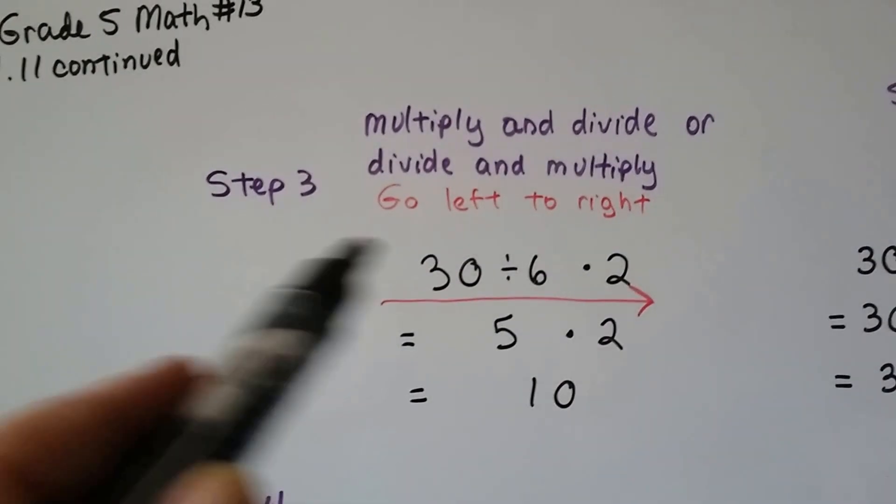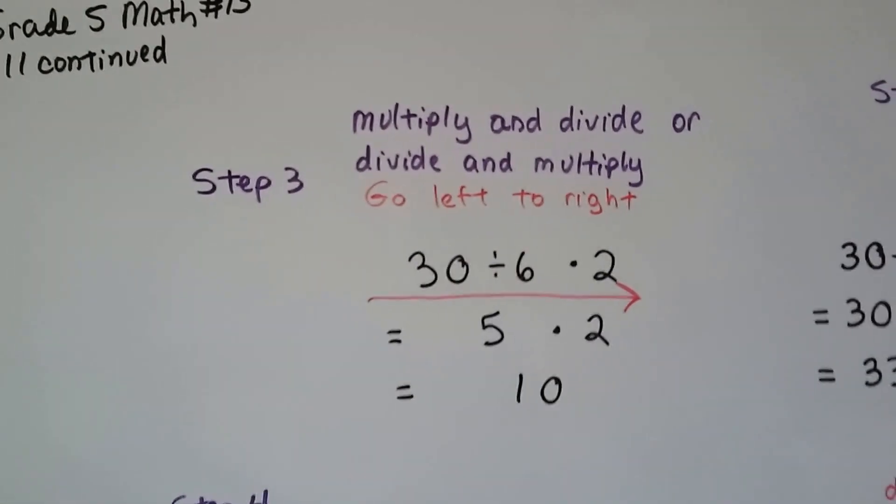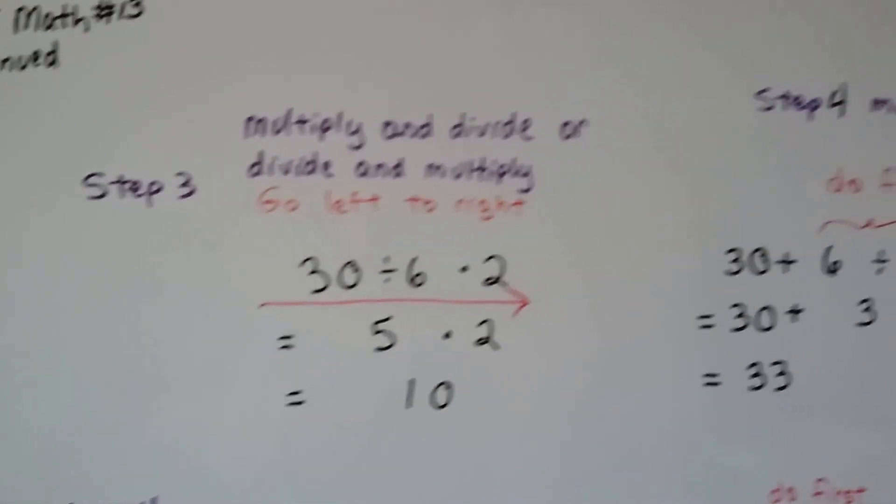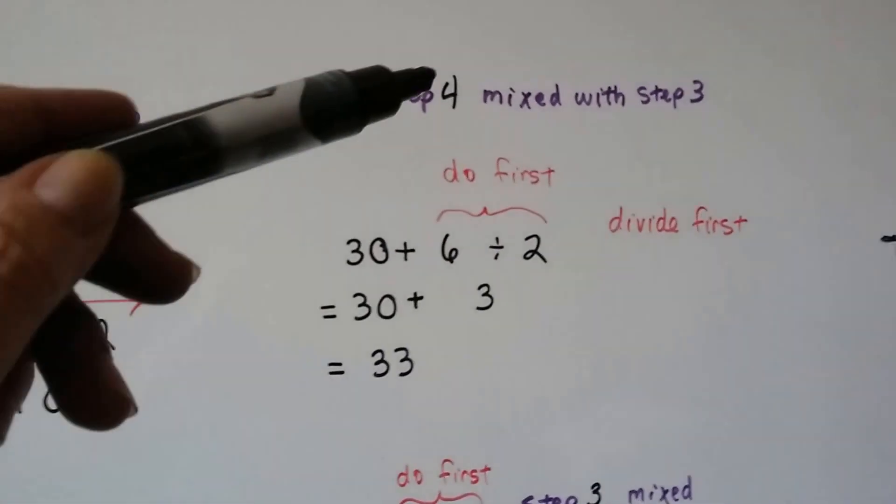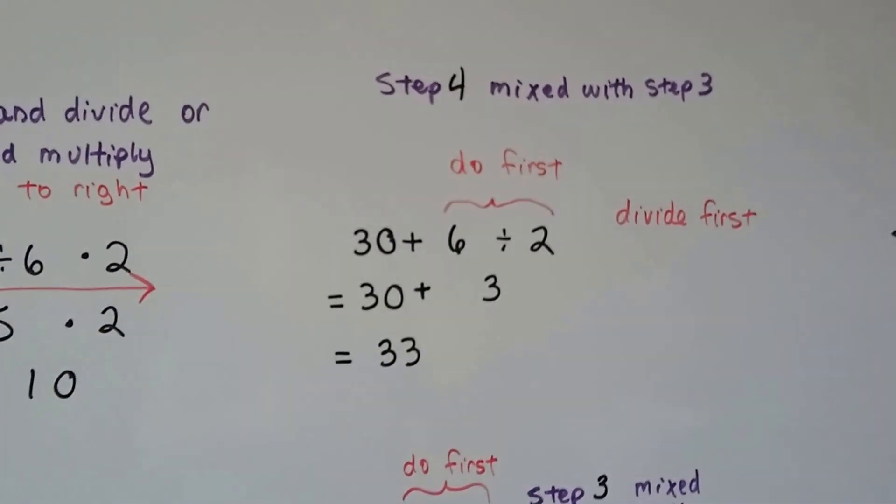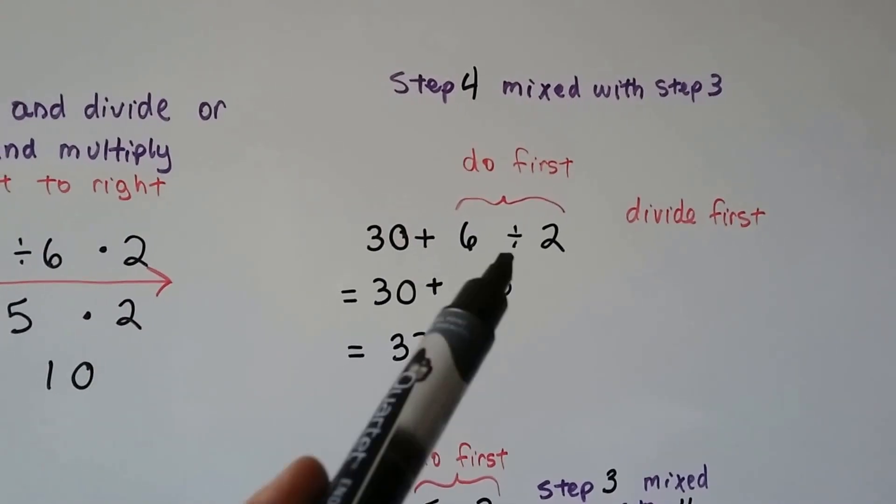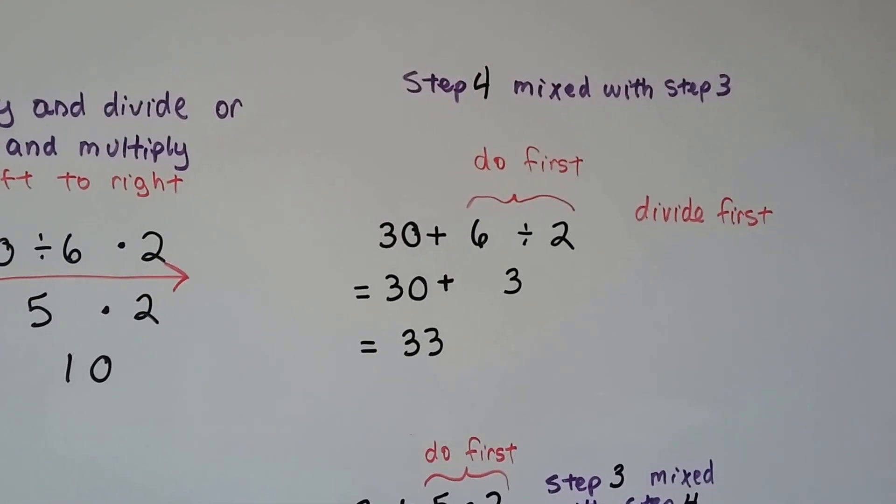Everything here is all step 3. It's the division and multiplication. The problem occurs when we mix step 4 with step 3. Now we've got step 4 addition with step 3 division. Now we have to do step 3 first. Now we have to divide first. So we get a 3 plus the 30 is 33.